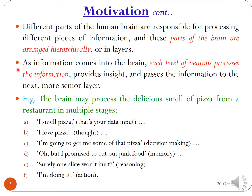Let us consider an example: the brain may process the delicious smell of pizza from a restaurant in multiple stages. Stage A: I smell pizza — this is your data input. Stage B: I love pizza — this is a thought. The next stage: I am going to get me some of that pizza — this is decision making, where our brain is making a decision.